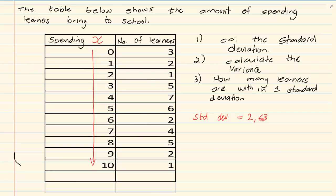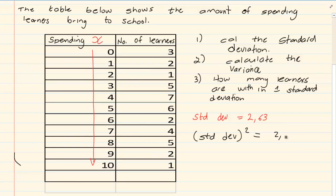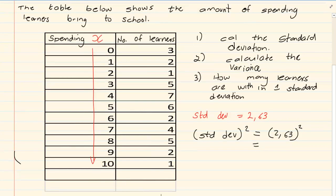When they say calculate the variance, the variance is simply the standard deviation squared. So you are going to take the standard deviation and square it. We are going to say 2.63 squared, which equals 6.9. So the variance is 6.9.